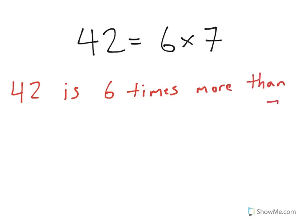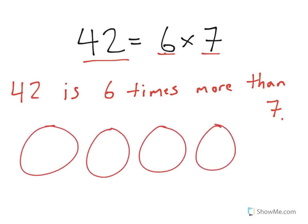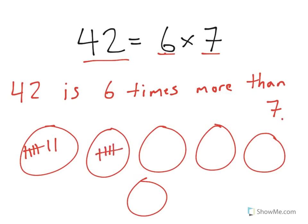42 is 6 times more than 7. And why is that true? Well, to get to 42, we would need 6 groups of 7. Now, if we draw out 6 groups of 7 and quickly represent the 7 in each one of these, what you'll see is that it's pretty clear: 42 is 6 times 7.